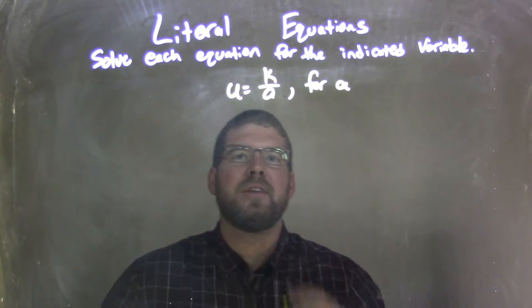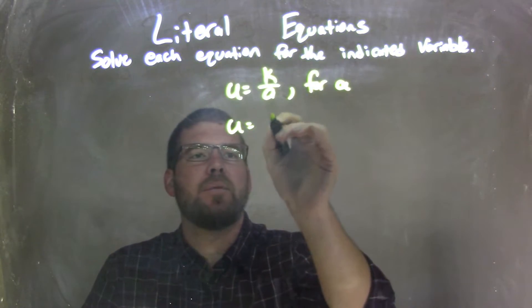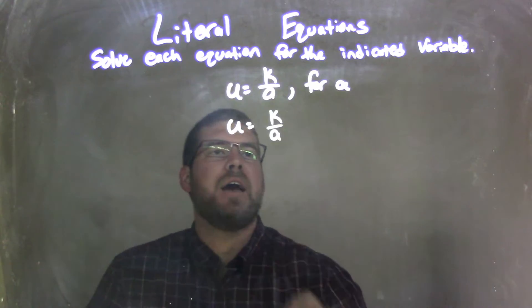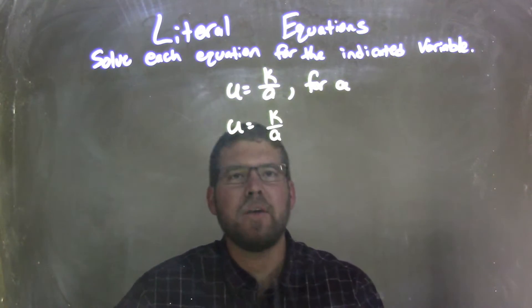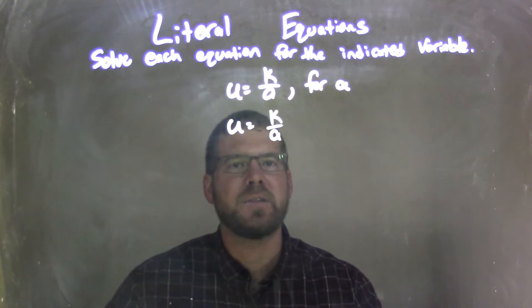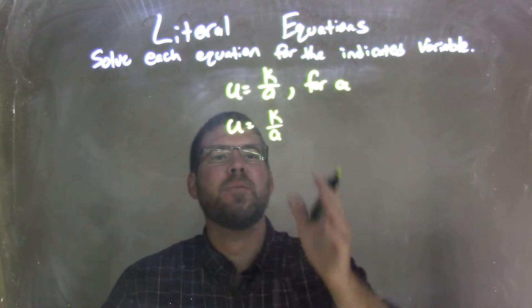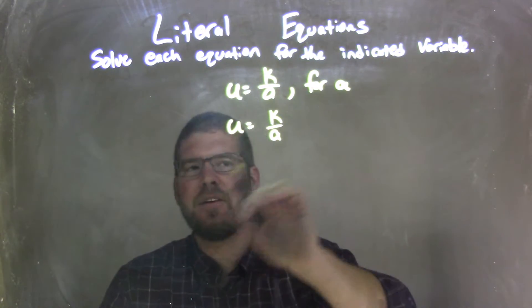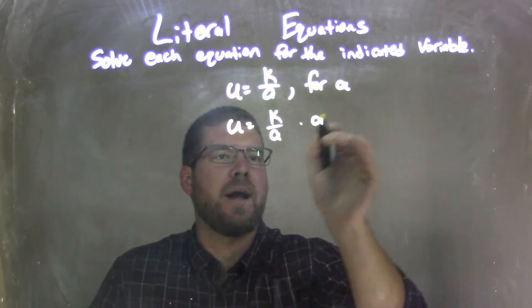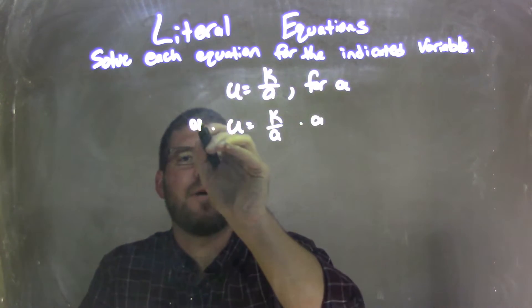So what I need to do then is I'm going to rewrite this equation, u equals k over a, and we're solving that for a. So there's a few ways to go about this. And this one, I'm actually, I'm going to multiply a to both sides. And I know what you're thinking, like wait, no, if you multiply a to both sides, you're just adding a to the other side. I know.